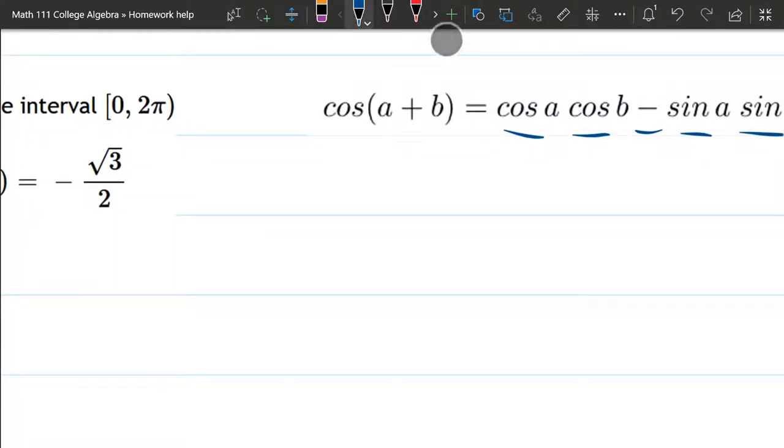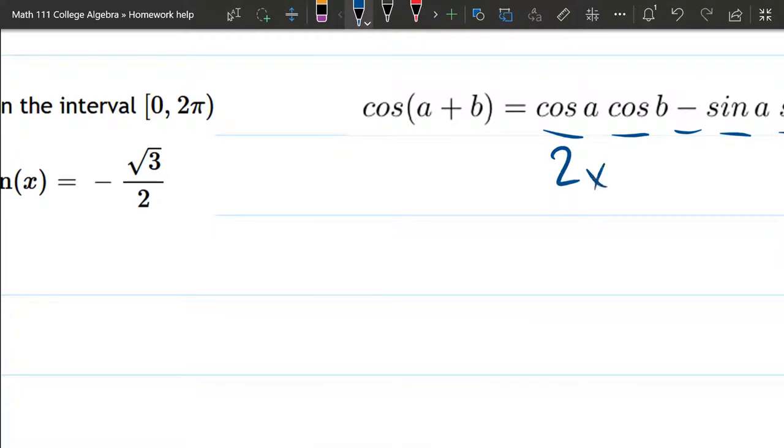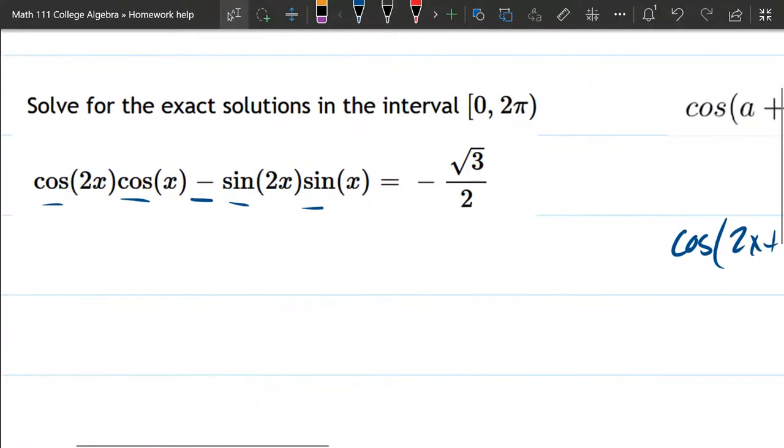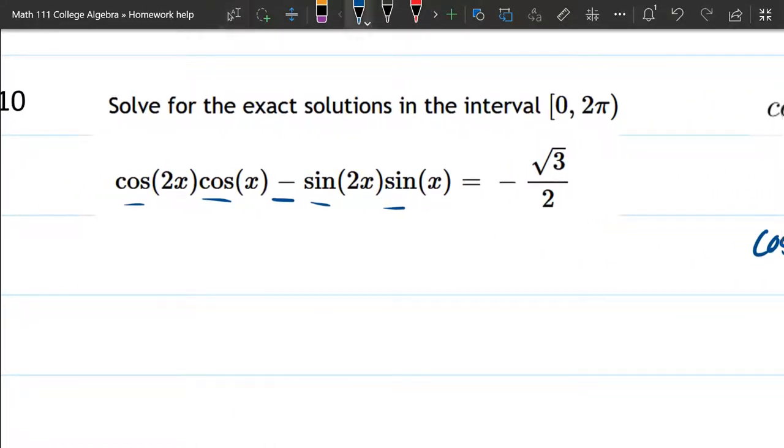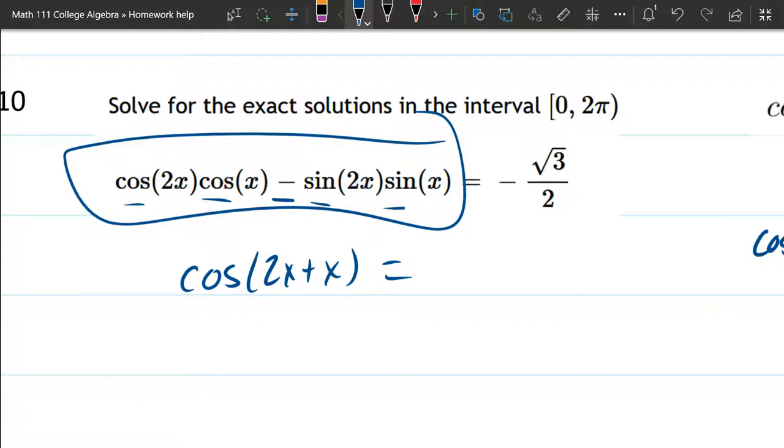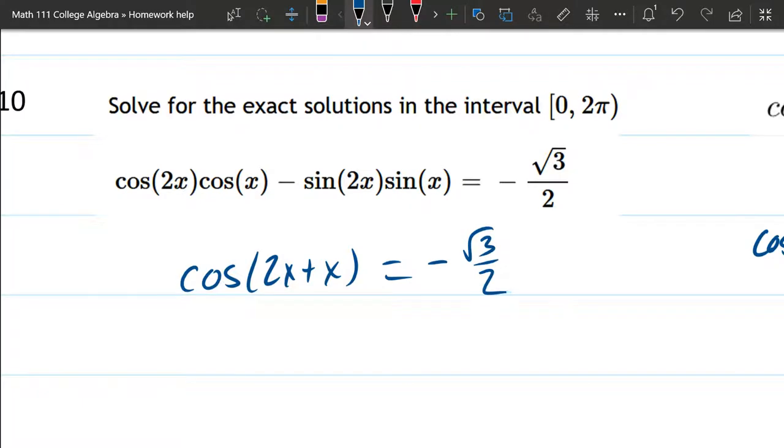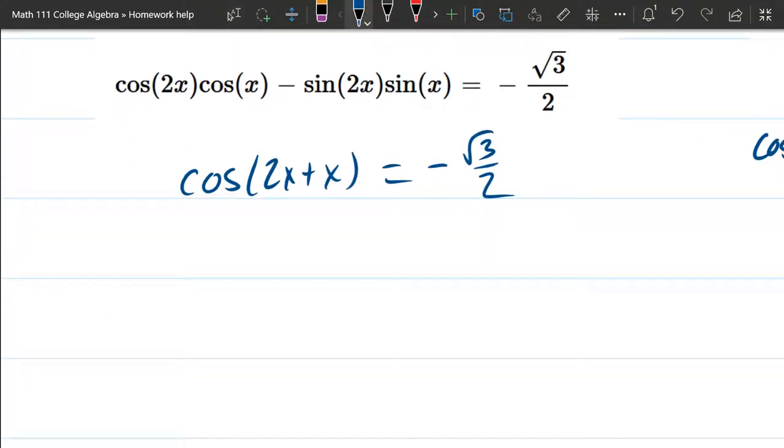The only difference is we've got our first angle is 2x, a is 2x, and b is regular x. So that means when we write the left side, this is cosine of 2x plus x. So we're going to rewrite the left side as cos of 2x plus x. And what's the right side? Just negative square root 3 halves. 2x plus x, that's 3x.